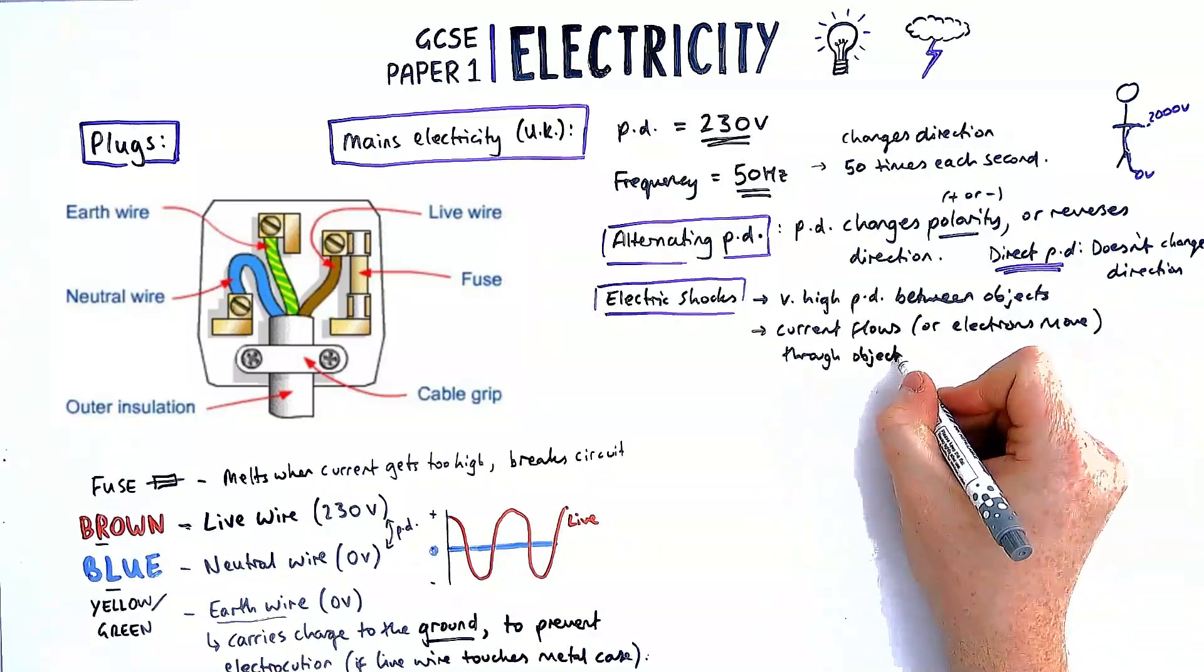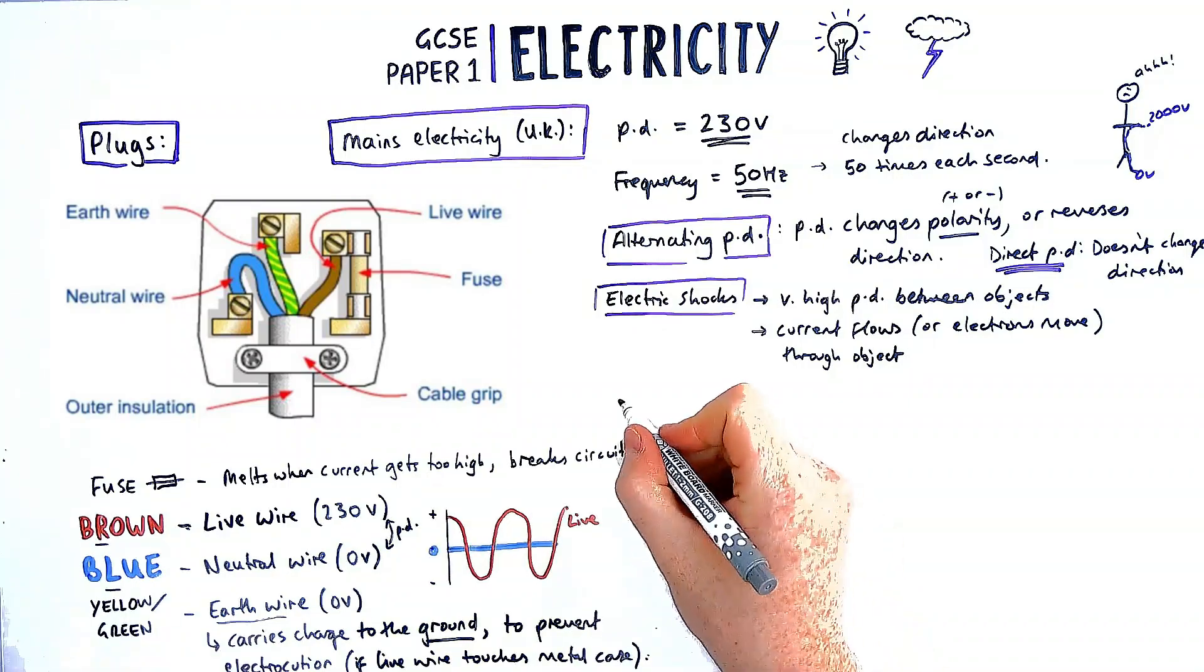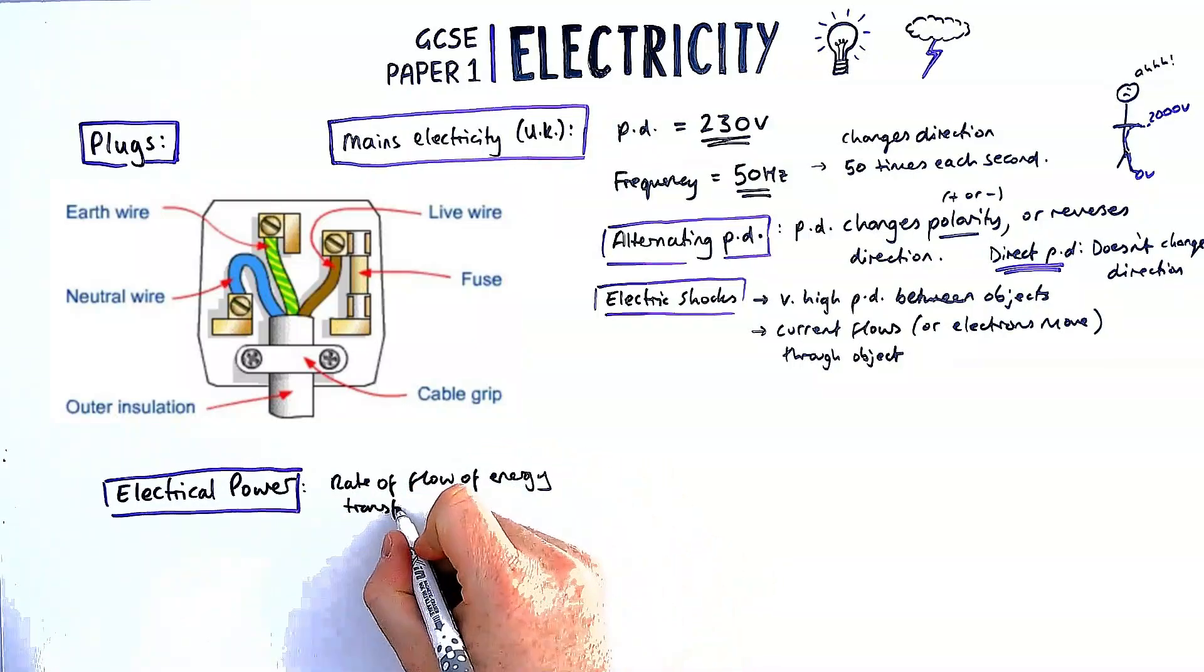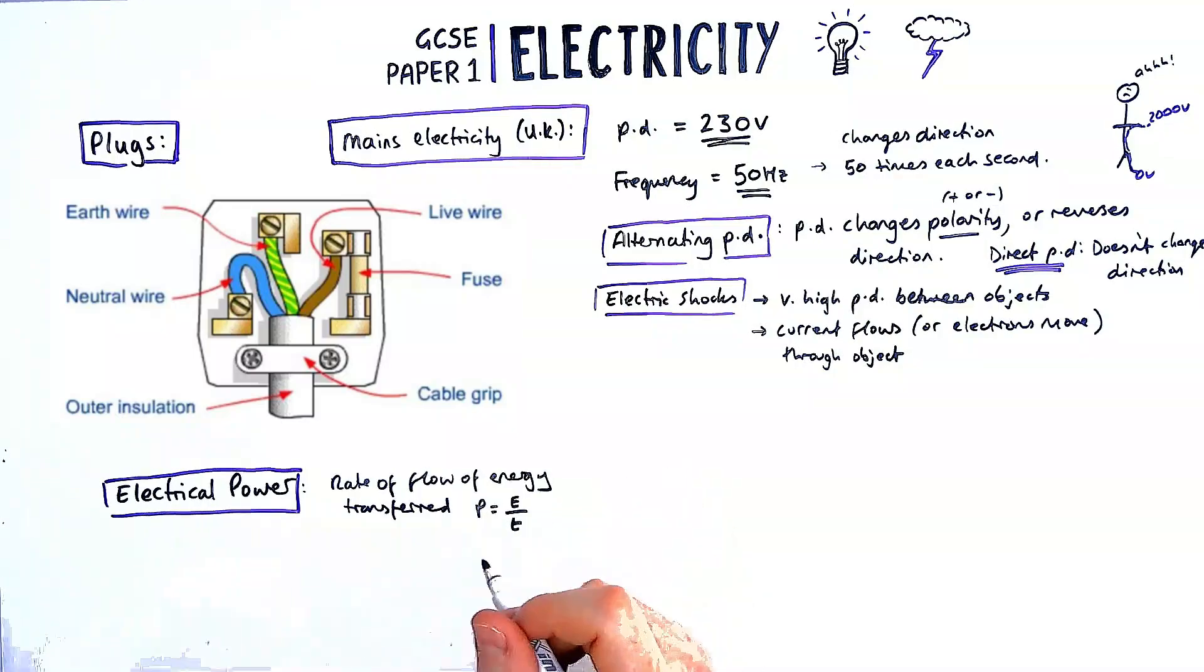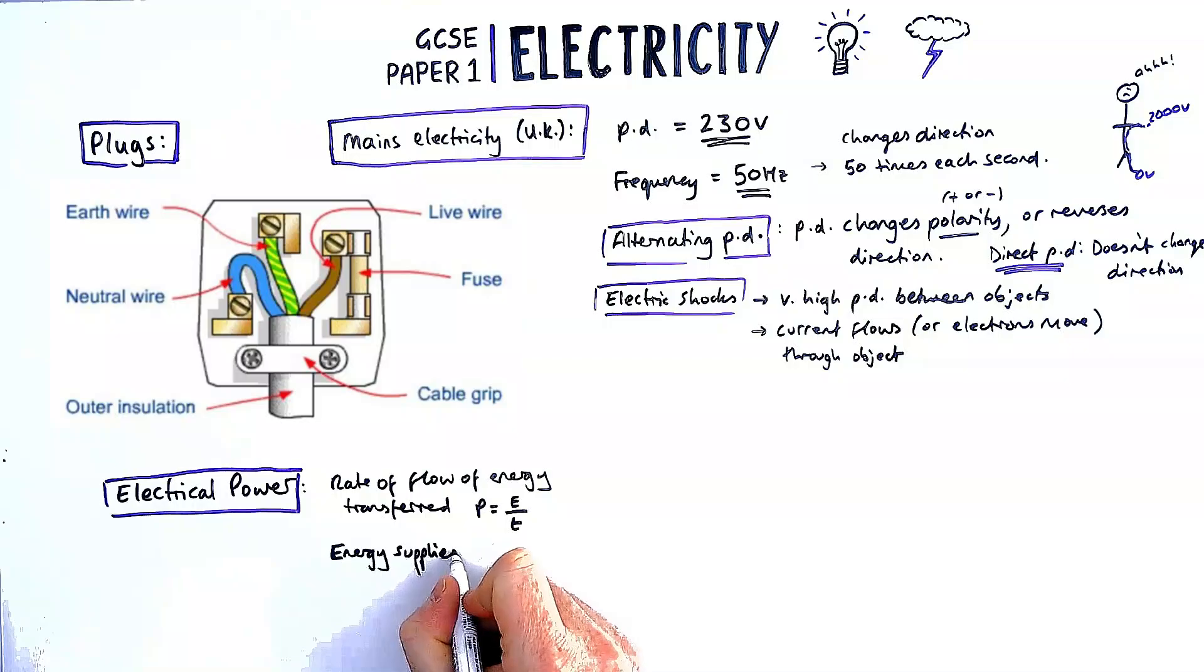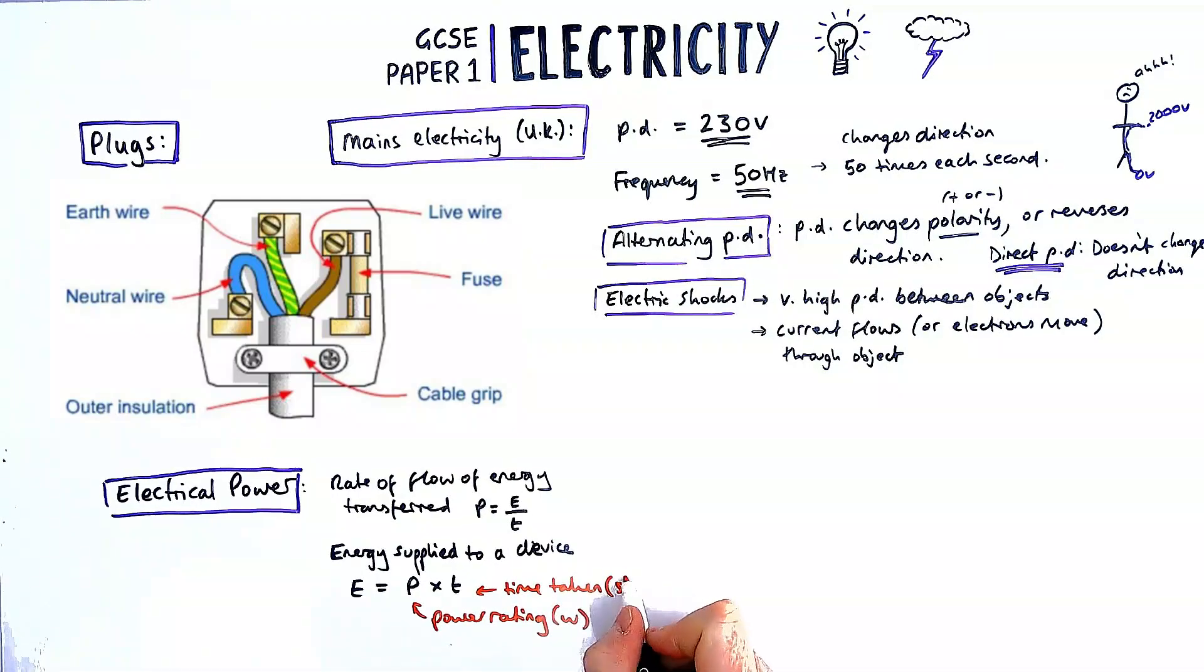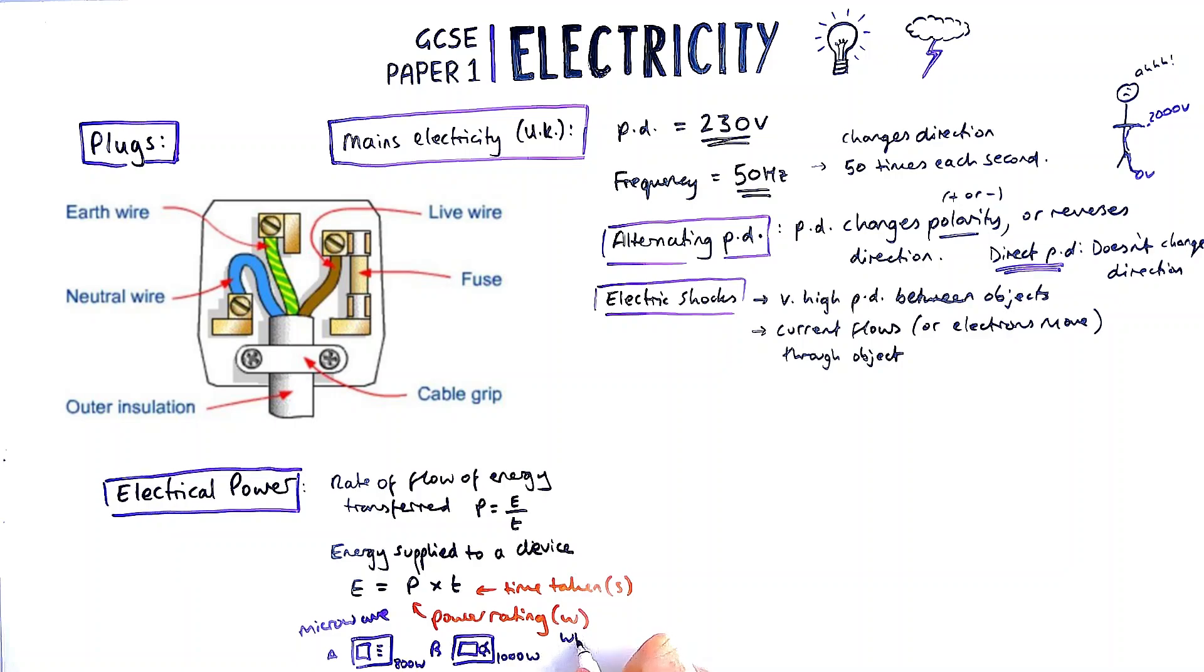Inside any electrical circuit there is going to be some electrical power supplied by a battery or cell. The definition of power is the same as from the energy topic: the rate of flow of energy transferred. We can also use it to calculate the energy supplied to a device. If we knew the power rating of the appliance, we multiply that in watts by the time taken in seconds to find the energy supplied to the appliance in joules. In this quick example, if I've got two microwaves, one operating at 800 watts and one at 1000 watts, with the same plate of food in each, which heats up the food first? Given that the energy needed to heat up each plate would be the same, the one with the higher power rating would heat it up in a lower time, so the 1000 watt microwave.